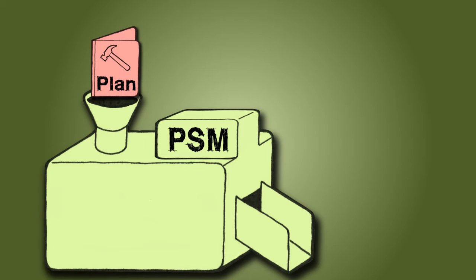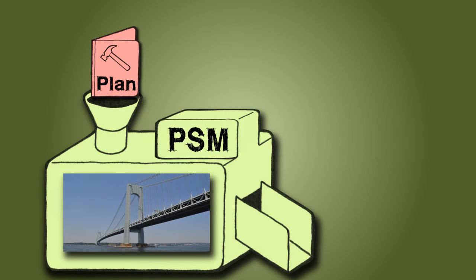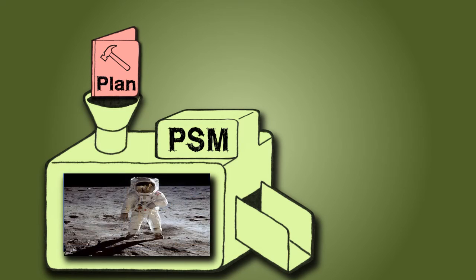Confused? Don't be. Look at it like this: the plan to build a bridge or to become an astronaut is divided into smaller plans, which in turn go back into the main plan. It's like a cycle of life.